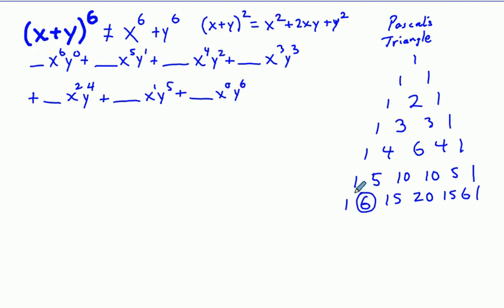And now we can go access our row 6 of our Pascal's triangle and place our coefficients here. So we have 1, 6, 15, 20, 15, 6, and 1.